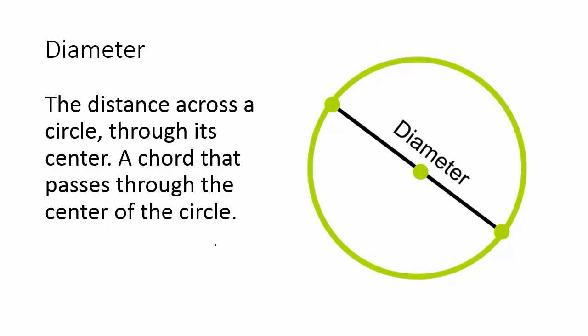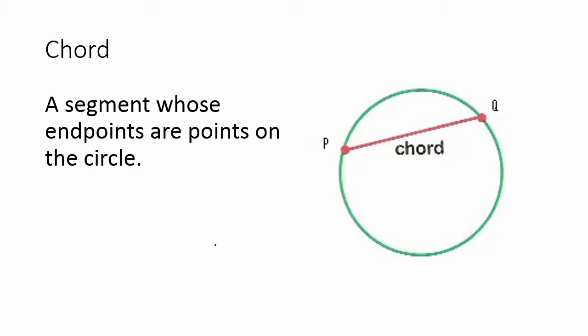Diameter: the distance across the circle through its center. A chord that passes through the center of the circle. Chord: a segment whose endpoints are points on the circle. A diameter is also a chord because it has endpoints on the circle. The difference between a chord and the diameter is that the chord will go through any part of the circle as long as it has endpoints on the circle, while the diameter goes through the center.